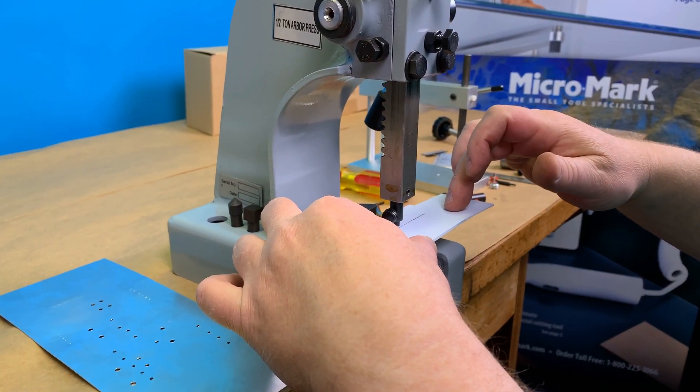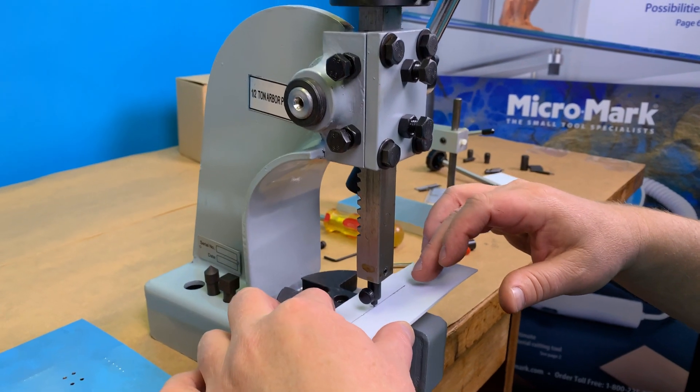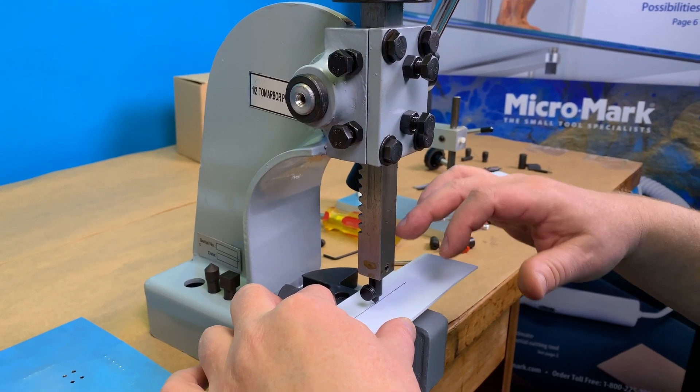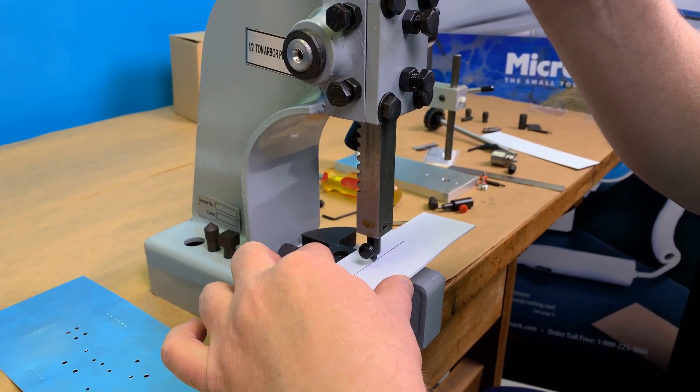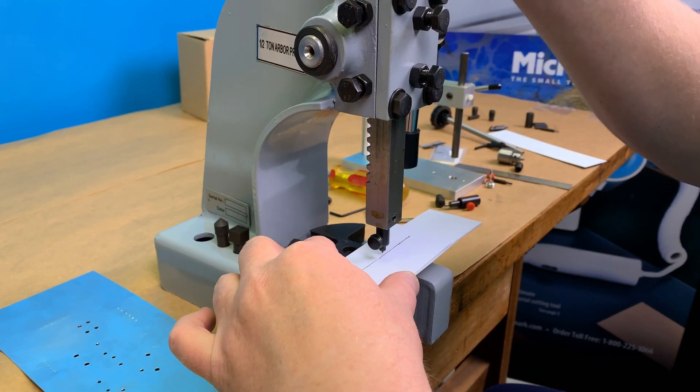I've laid another piece of styrene underneath it in order to keep the piece that I want from bowing or flexing excessively.